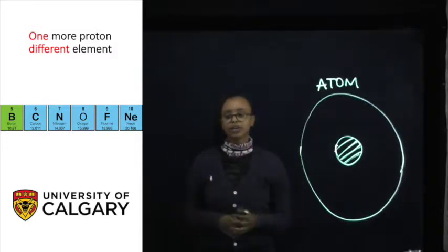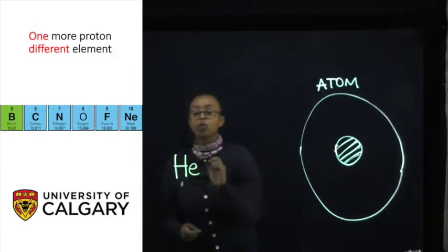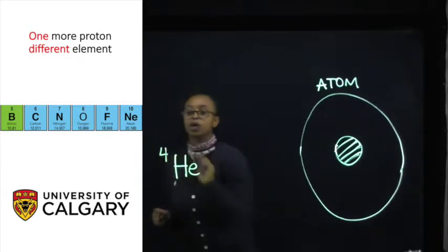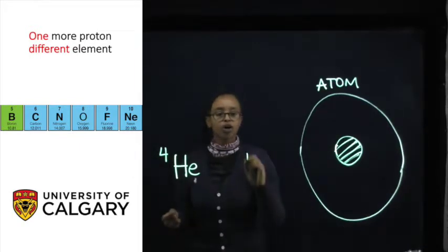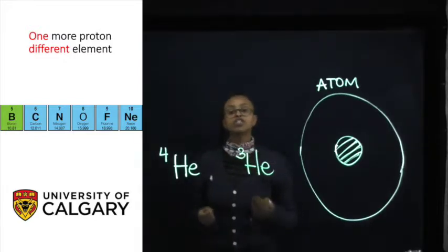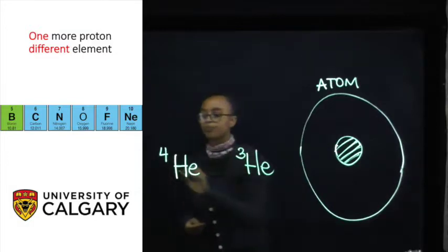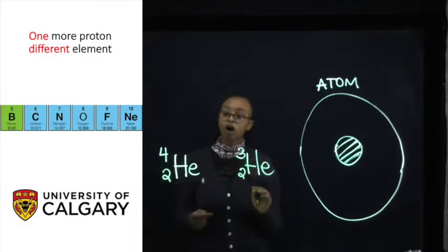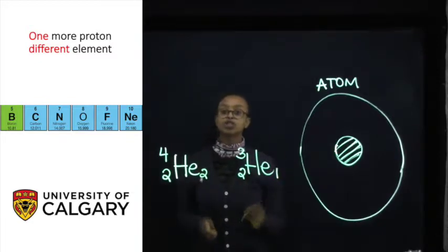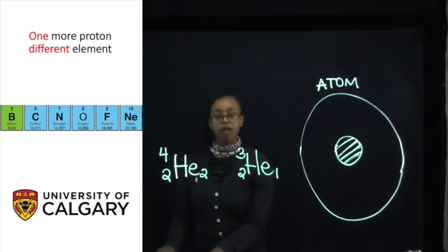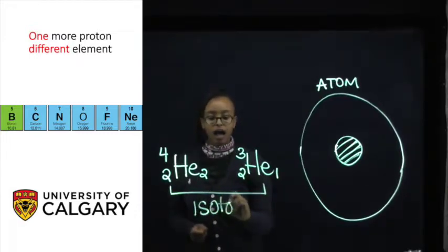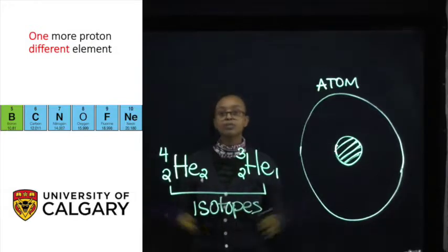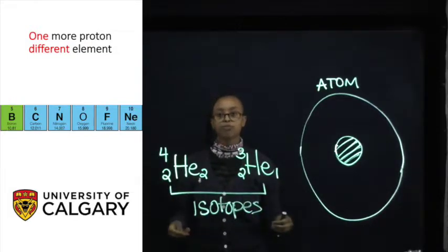We said earlier that helium is most commonly found with an atomic mass of four. But if changing the proton number completely changes the element, a different helium isotope just means there's a different number of neutrons — the proton number will not change, but the neutron number will. These are known as isotopes: same number of protons, different number of neutrons.